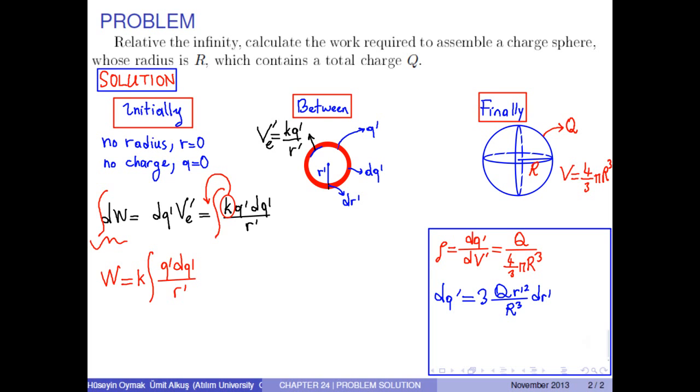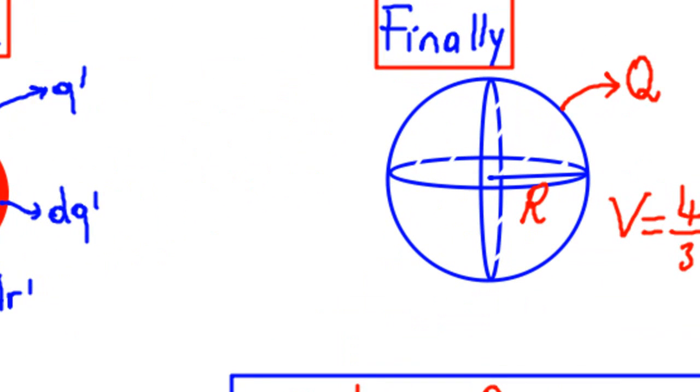Also, we can find an expression for q' in terms of Q and R. Finally, we have the volume 4/3 times pi times R cubed and the total charge Q.